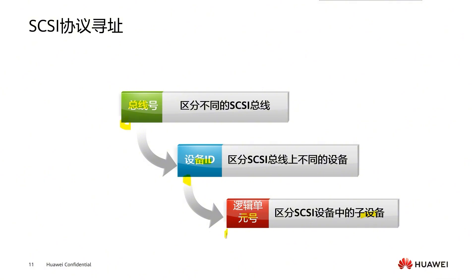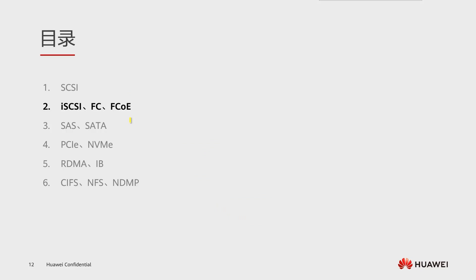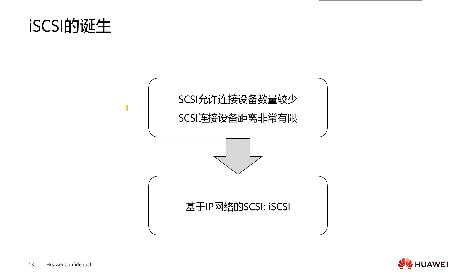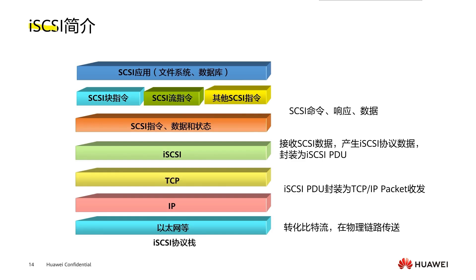Although the SCSI controller can connect multiple storage devices forming its own network, it can only communicate with directly connected storage devices within a local area network — it cannot be shared on Ethernet. Therefore, the distance of stored data using SCSI is very limited. In order to use the SCSI protocol to store data over long distances, a new technology was developed: iSCSI. The 'i' in iSCSI represents Internet, referring to the SCSI protocol based on the IP network.